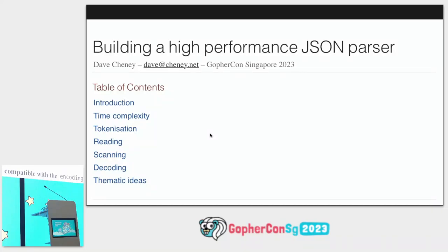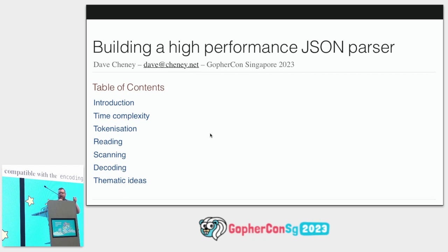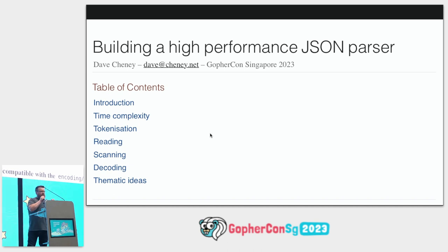An efficient Go package — and I'm going to use, for my example, building a JSON parser. Before we get started, let's talk about some of the goals of the project: what are the things that we want to achieve when we're done?